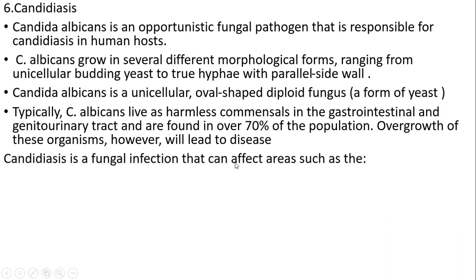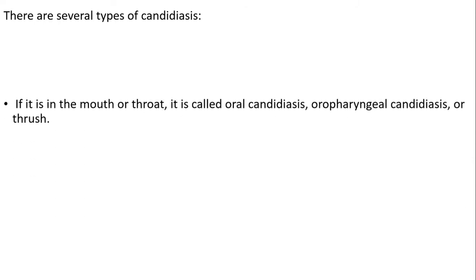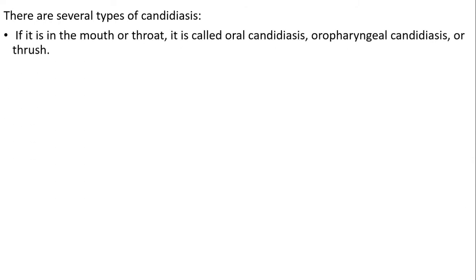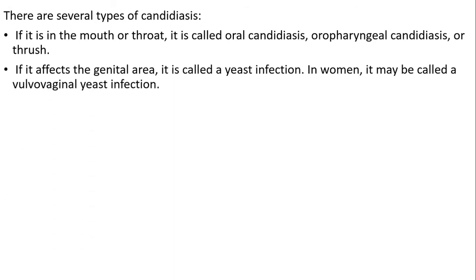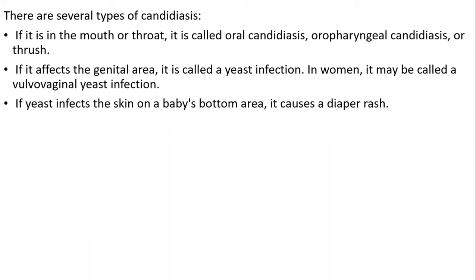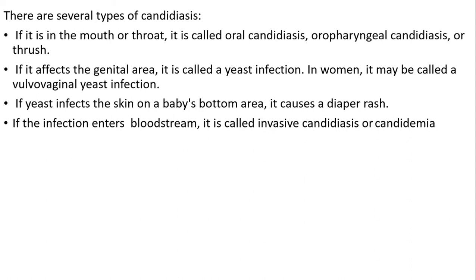Candidiasis is a fungal infection that can affect areas including skin, genitals, throat, mouth, and blood. There are several types: if it is in the mouth or throat, it is called oral candidiasis, oropharyngeal candidiasis, or oral thrush. If it affects the genital area, it is called a yeast infection — in women, it may be called vulvovaginal yeast infection. If the yeast infection affects the skin in the baby's diaper area, it is called diaper rash. If the infection enters the bloodstream, it is called invasive candidiasis or candidemia.